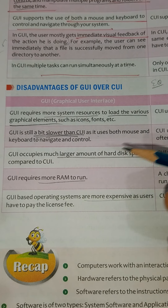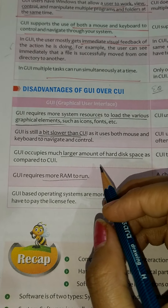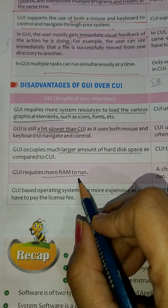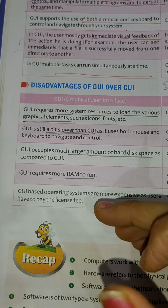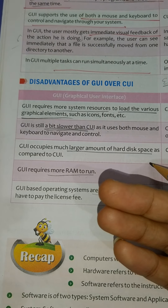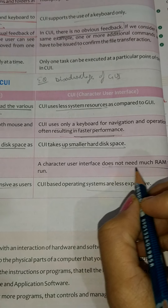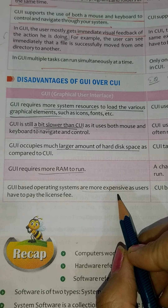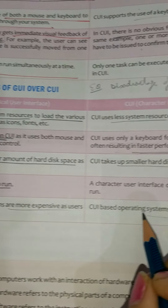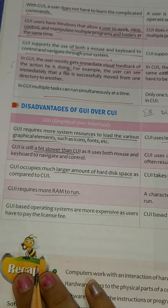GUI requires more RAM to run. Also, GUI-based operating systems are more expensive compared to CUI, which is less expensive. So these are the differences, or disadvantages of GUI over CUI.